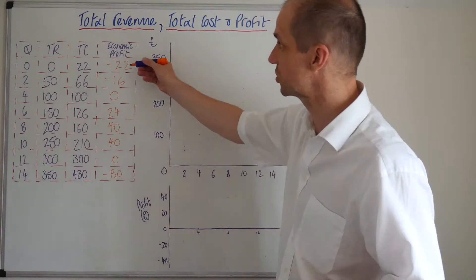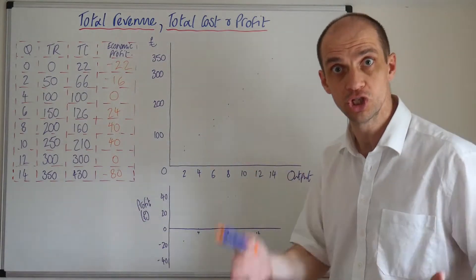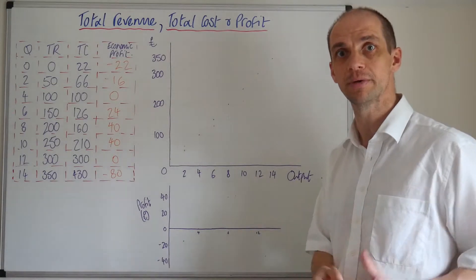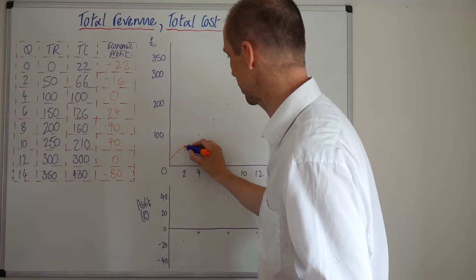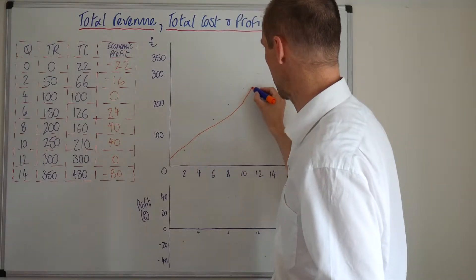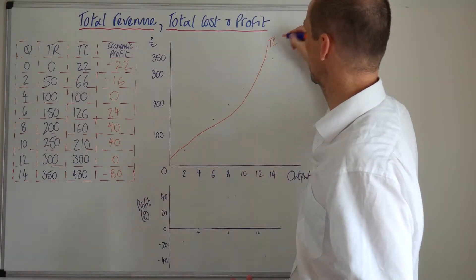we know that this starts at a level of 22, because whether or not the actual firm produces output, they still need to pay rent or mortgage payments or business rates. So as we then draw up these lines, we can see that our total cost looks something like so.